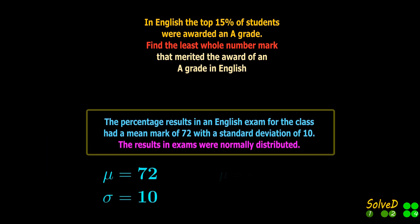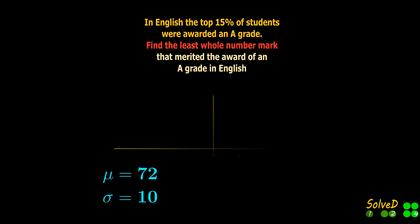The mean and the standard deviation are given. The probability that a random variable is greater than certain Z is given as 15%. This equals the area to the right of point Z.